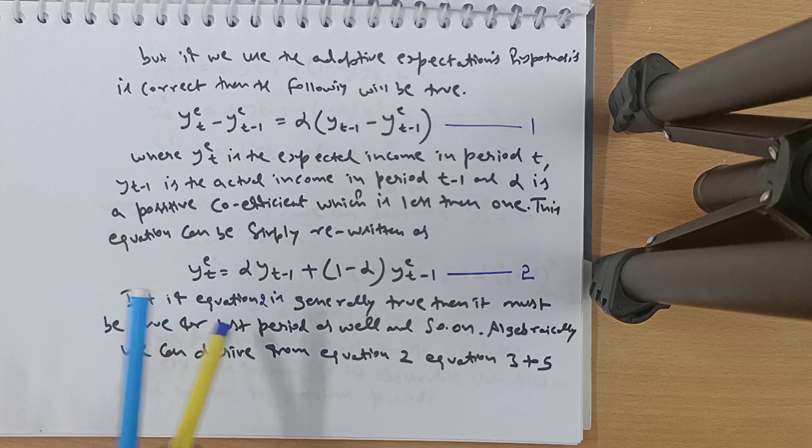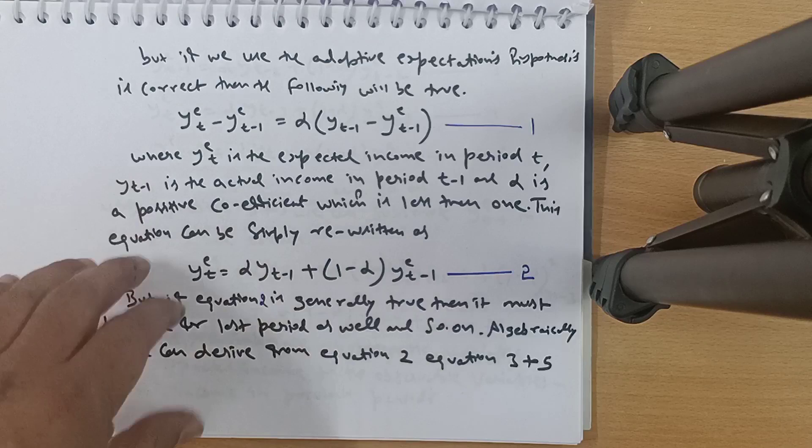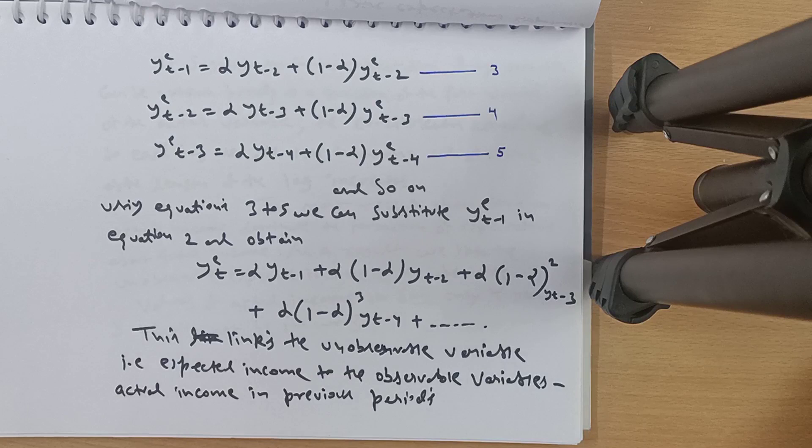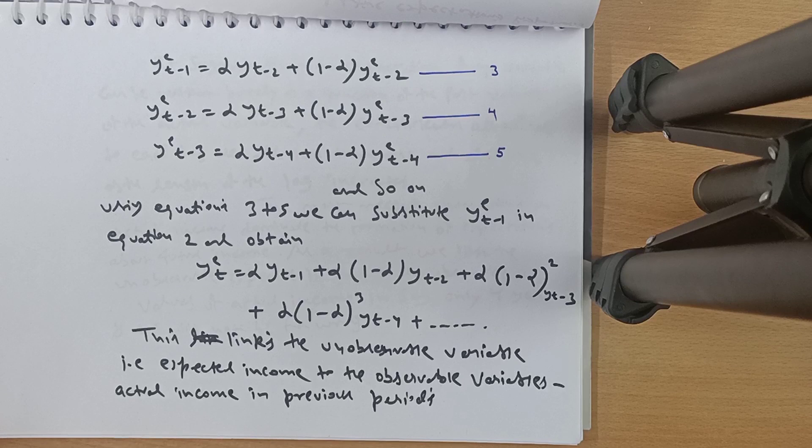Rewriting: Y^E_t equals alpha times Y_(t-1) plus (1 minus alpha) times Y^E_(t-1). If this equation is generally true, it must be true for the last period as well, and so on. Going backward algebraically through periods t-1, t-2, t-3, and so on, we can substitute back and link the unobservable variable — expected income — to the observable variable — actual income in previous periods.